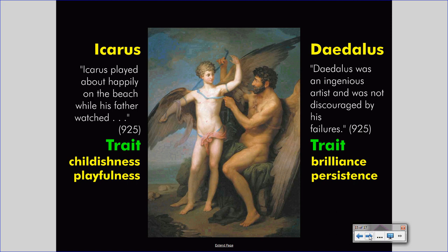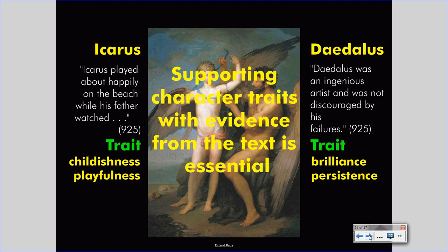Something vitally important in understanding how to deal with character is the role of evidence. We used evidence from the text for both Daedalus and Icarus to determine what the character traits were. Whether we were looking at direct or indirect characterization, we were always proceeding from the text. When you are discussing characterization in writing or verbally, you must always make references to page numbers, quotations, and text information. Supporting character traits with evidence from the text is essential.